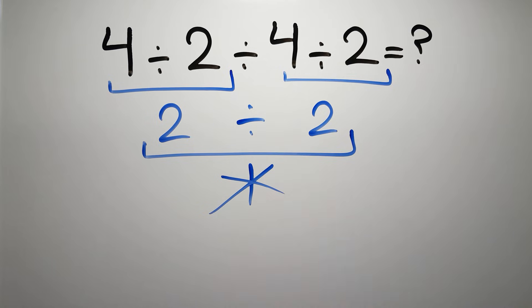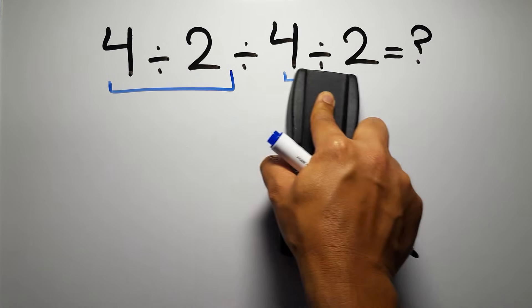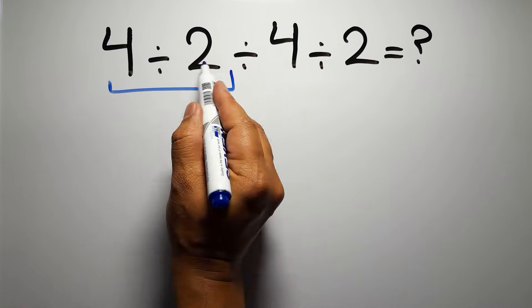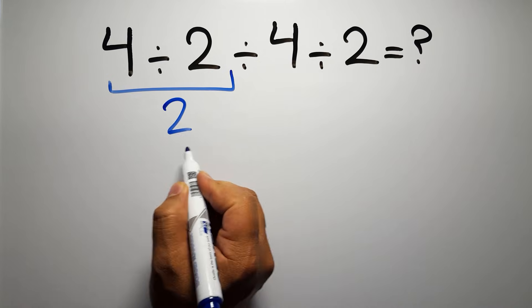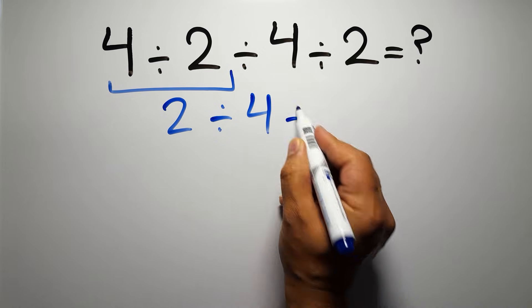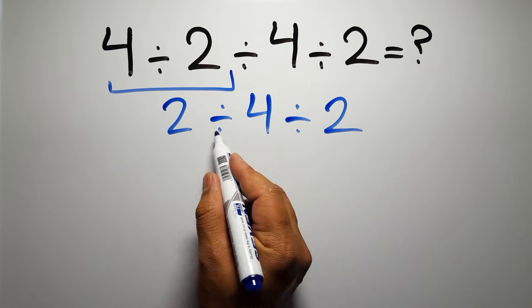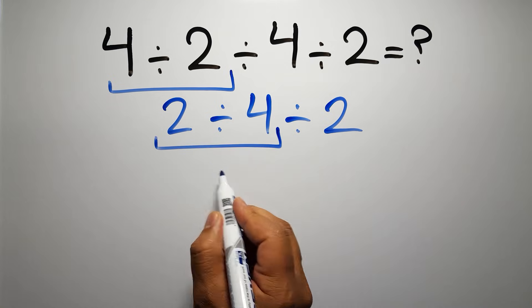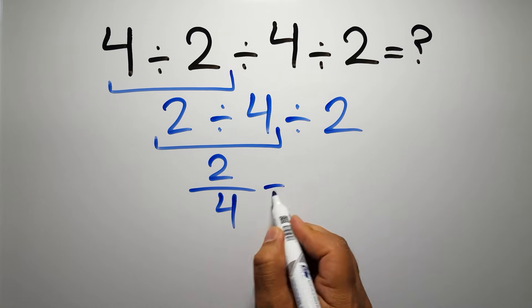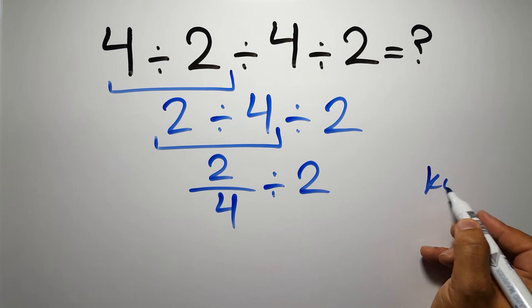So first, this division: 4 divided by 2 is just 2. So we have 2 divided by 4, then divided by 2. Now we have to do this division. 2 divided by 4 can be written as 2 over 4, then divided by 2. Now, according to the KCF rule: